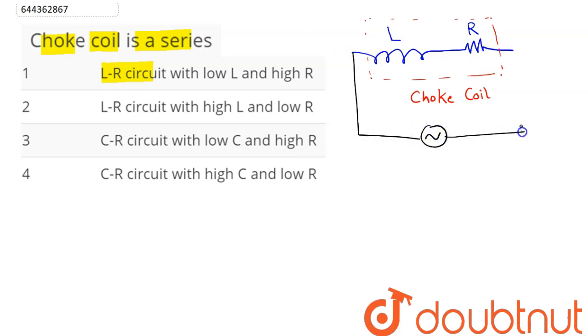So this is connected to some AC source to control the current from this AC source. Now we know the voltage across this is V naught sine omega t, so the current flowing through this will be equal to i naught sine of omega t plus phi.